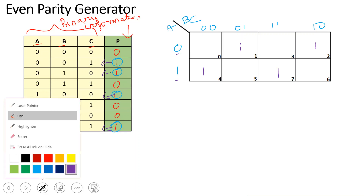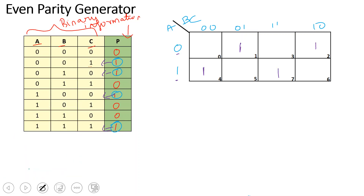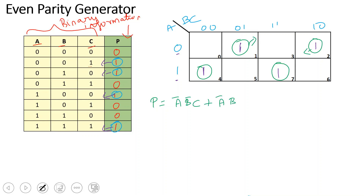So, going for the K-map, I will form pairs. There are no chances of grouping pairs together — they are all separate. So I can write the parity expression P equals: for cell 1, A-bar, B-bar, C; plus A-bar, B, C-bar; plus A, B-bar, C-bar; and for cell number 7, plus A, B, C.